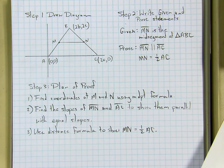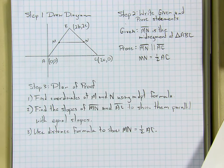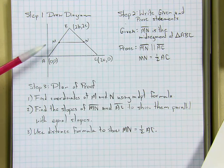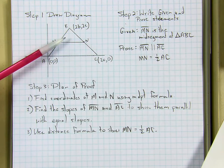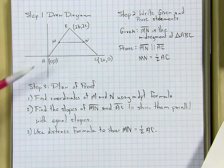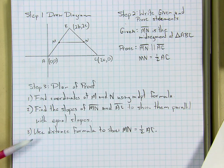Someone was asking about problems 22 through 25. Problem 22 is not really like that, but 23, 24, and 25 ask you to plan a proof. So you're going to draw a picture, write the given and proof for your picture, and then say what formulas you're going to use and how you're going to use them.